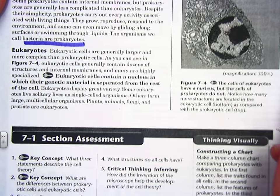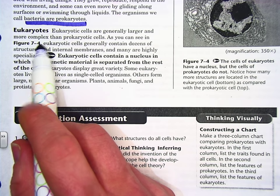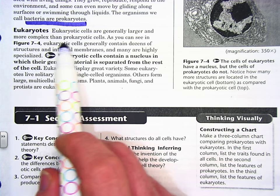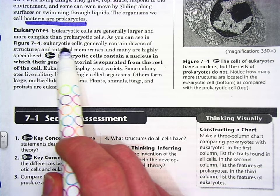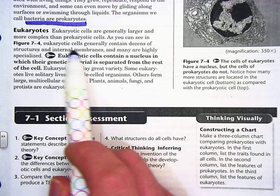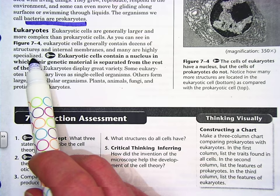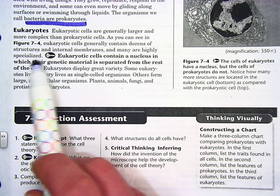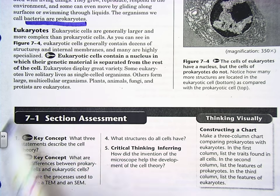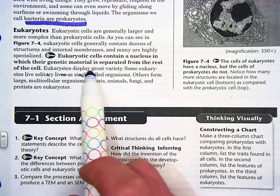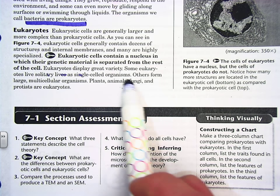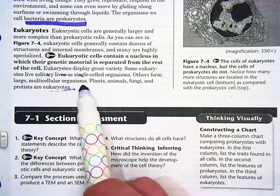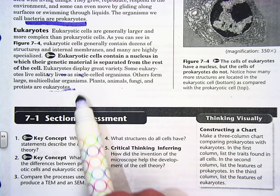Eukaryotes. Eukaryotic cells are generally larger and more complex than prokaryotic cells. As you can see in figure 7-4, eukaryotic cells generally contain dozens of structures and internal membranes, and many are highly specialized. Eukaryotic cells contain a nucleus in which their genetic material is separated from the rest of the cell. Eukaryotes display a great variety — some live solitary lives as single-celled organisms, others form large multicellular organisms. Plants, animals, fungi, and protists are eukaryotes.